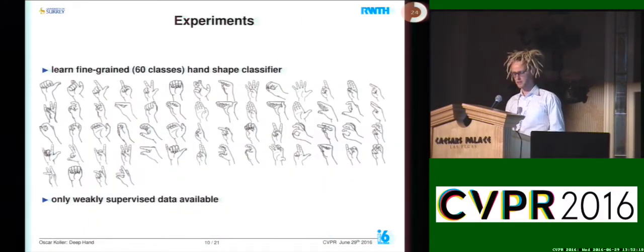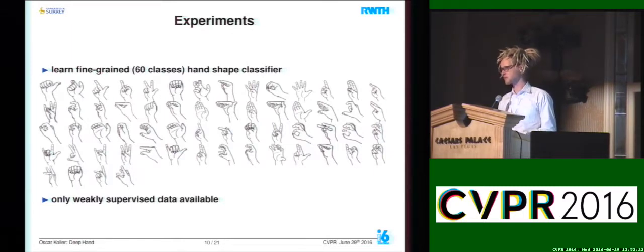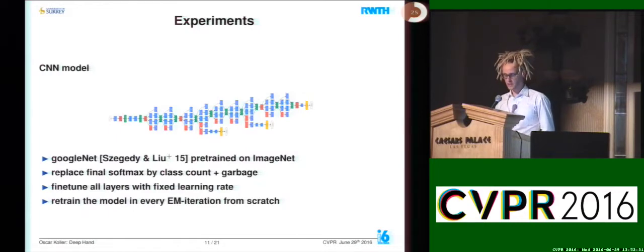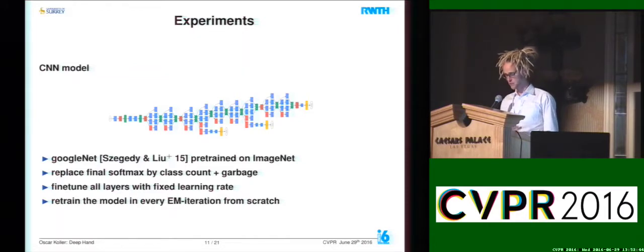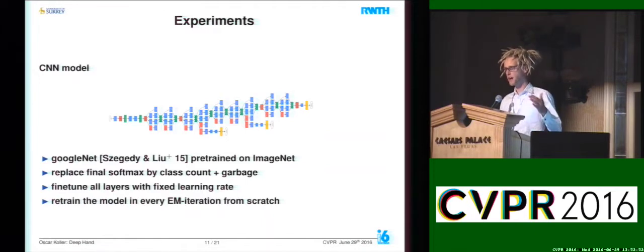In terms of experiments, we want to learn a fine-grained handshape classifier that distinguishes 60 different handshapes with very fine-grained differences. We only have weakly supervised data available. Our CNN model relies on a feedforward GoogleNet structure pre-trained on ImageNet. We replace the final softmax with our class count of 60 plus an additional garbage class, and we fine-tune all layers with a fixed learning rate, fine-tuning from the pre-trained model in every iteration.